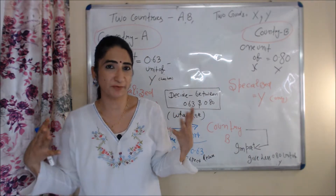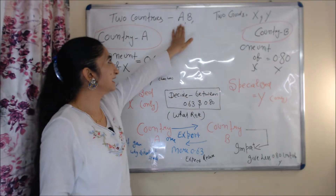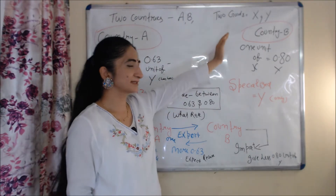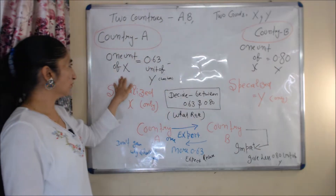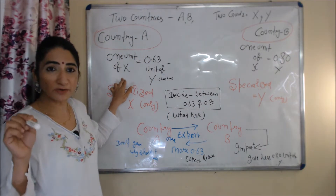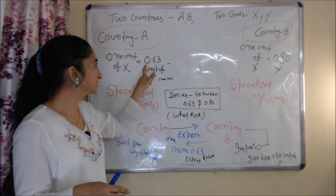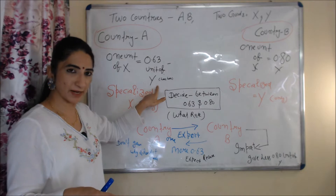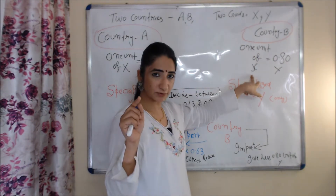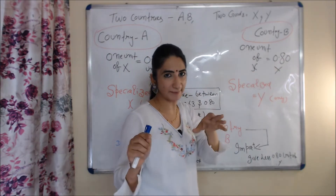Going to international trade equilibrium, we will talk about domestic conditions of each country — before trade conditions. Here we assume we have only two countries, A and B, producing only two goods, X and Y. If country A wants to produce one unit of X, it has to give up 0.63 units of Y. On the other hand, if country B wants to produce one unit of X, it has to give up 0.80 units of Y.